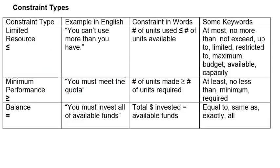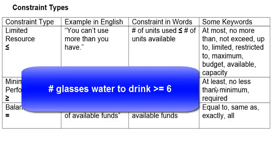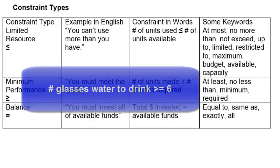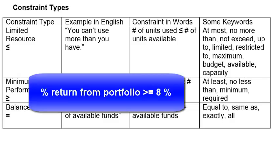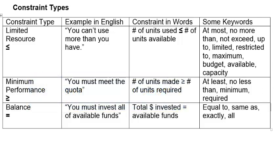Here are some keywords for greater than or equal to type constraint. Let's say you must drink at least six glasses of water per day. Or you are required to drink minimum of six glasses of water per day. Investment portfolio must provide at least 8% expected return. That is, expected return must be greater than or equal to 8%. Another way of saying it is the required return is 8%, or the minimum acceptable return is 8%.